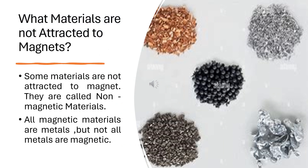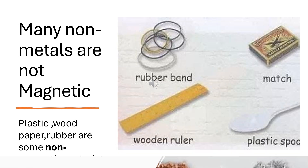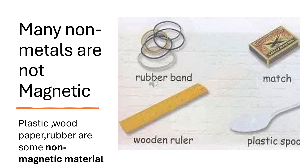What materials are not attracted to magnets? Some materials are not attracted to magnets — they are called non-magnetic materials. All magnetic materials are metals, but not all metals are magnetic. Many non-metals are non-magnetic. For example, plastic, wood, paper, and rubber are some non-magnetic materials.